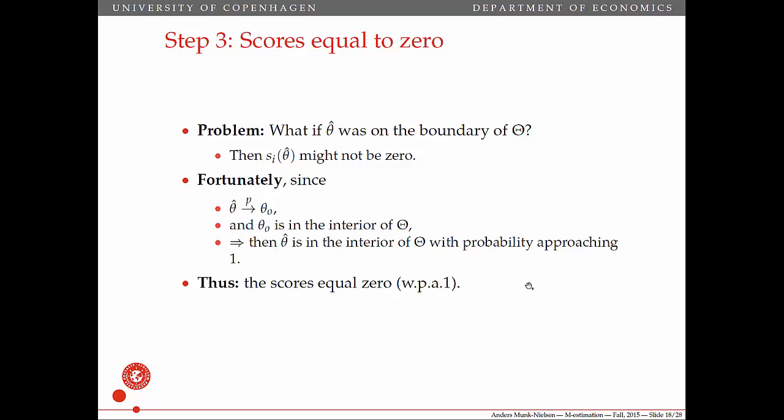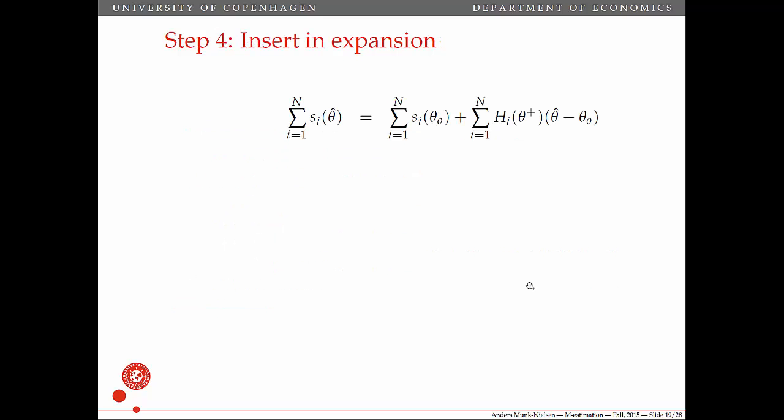Recall that what we're showing here is asymptotic normality — what happens when n tends to infinity — so we're not thinking of small sample stuff here. We had this mean value expansion, and now let's insert this.